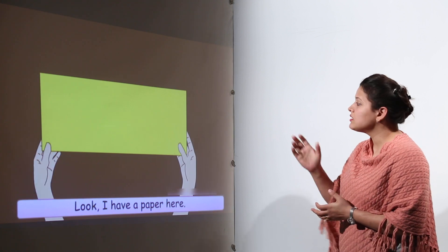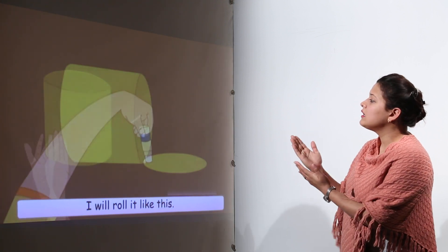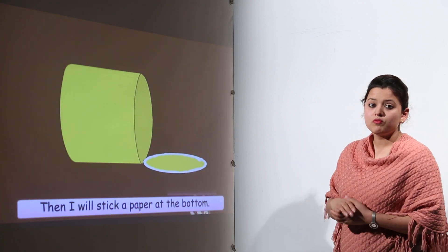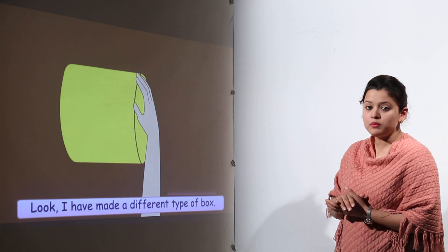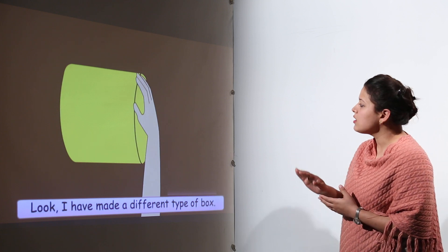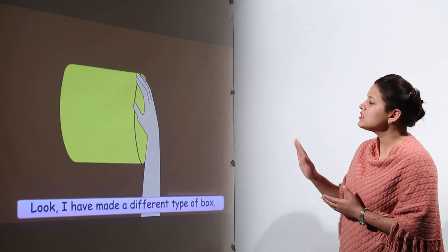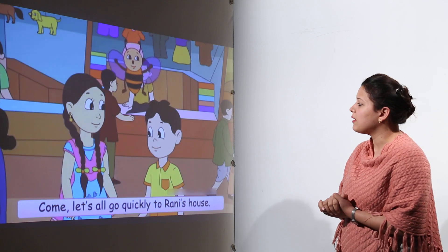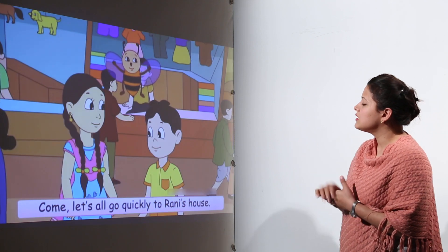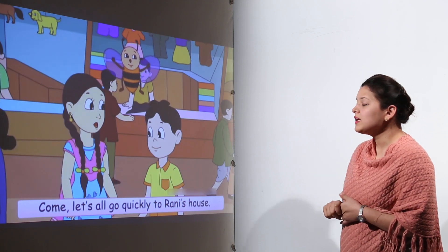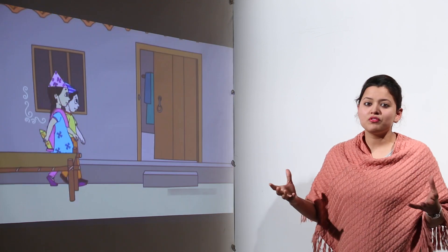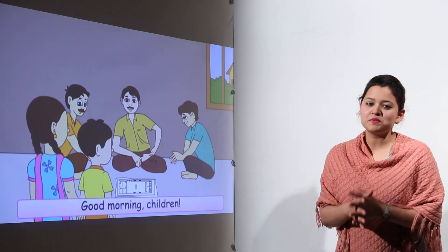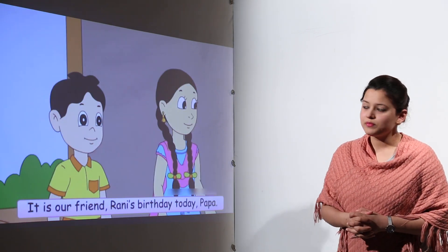Chinoo is folding the cardboard piece to make a box, and he just placed another lid over it with the help of gum. His box was ready. Now all their gift boxes were ready, and they all three rushed to Rani's birthday party.